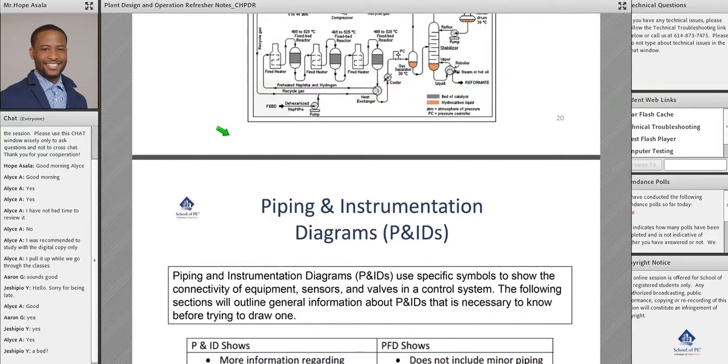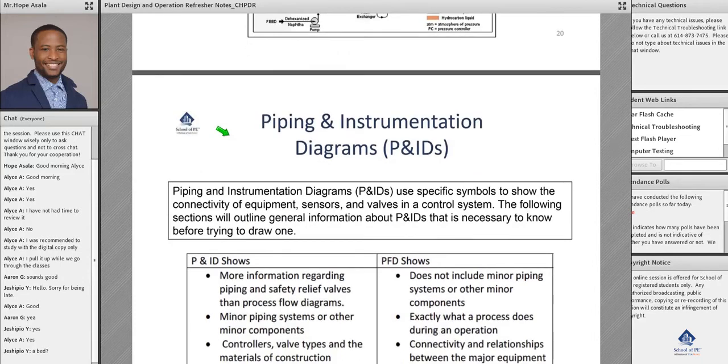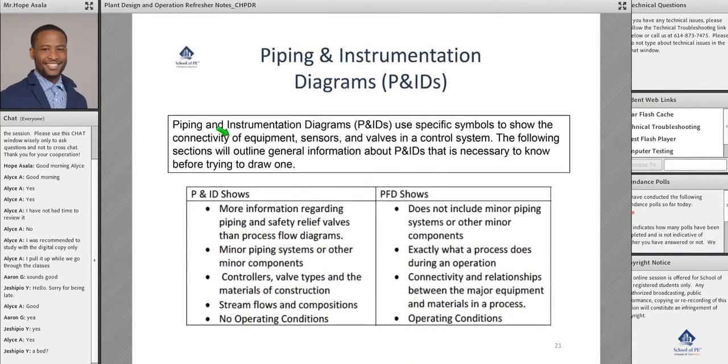For the P&IDs - piping and instrumentation diagrams - they use specific symbols to show the connectivity. You have to either memorize or go to your manual and see that, okay, this is the symbol for this equipment, this is the symbol for this valve.